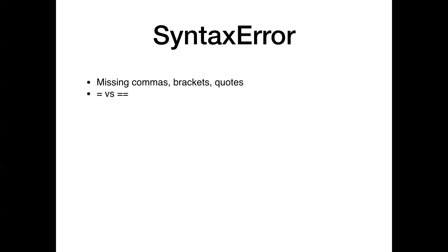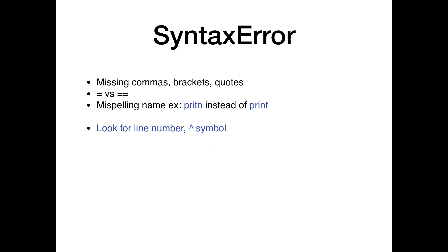The most common error you'll come across is a SyntaxError — typically a missing comma, bracket, quote, or things like that. If you use a single equals instead of double equals, it'll give you an error. If you make a typo while typing fast, like mistyping 'print', that gives you an error. You want to look for a line number and the caret symbol (^) in the error stack — it'll tell you which line number it's on and point to exactly where the syntax error is. For example, print should have parentheses — a missing bracket, a missing quote — these things happen all the time and are the easiest of all to find and correct.